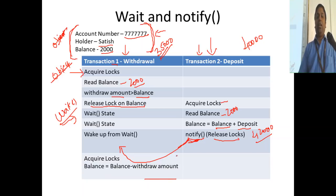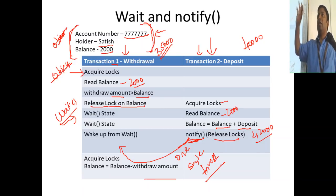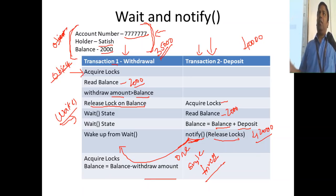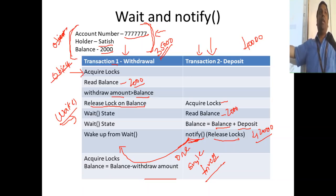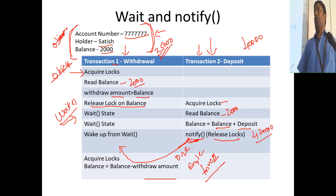When we talk about notify, the important thing is: notify can notify only one single thread. Please keep this in mind — when you call notify, you can wake up only one single thread that is in the wait state. There can be three or four threads in the wait state, but only one single thread will be triggered and will go acquire the lock.